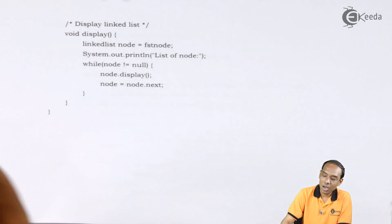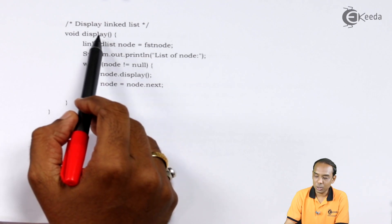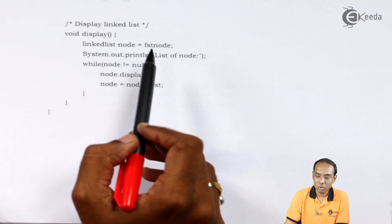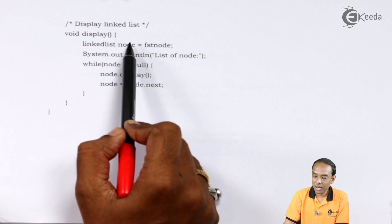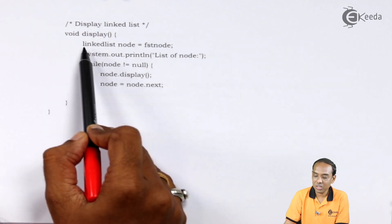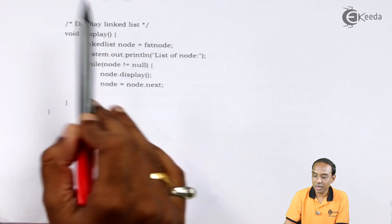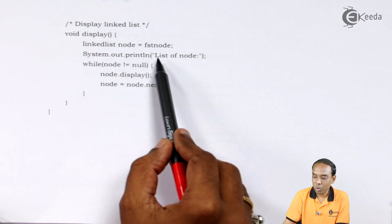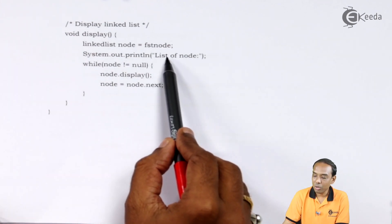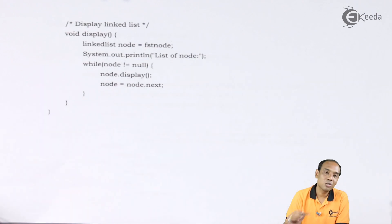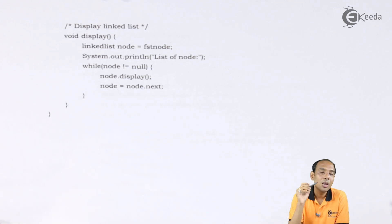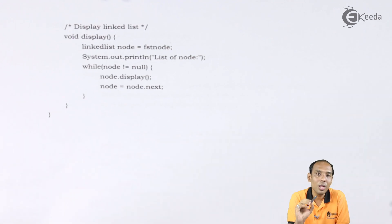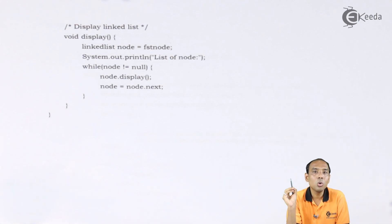To display the values I have used a function called display. First I will transfer the first node value to the node variable — a reference variable of the linked list class which we created previously. So we define 'list of node'. This will hold true in the while loop while node is not equal to null.